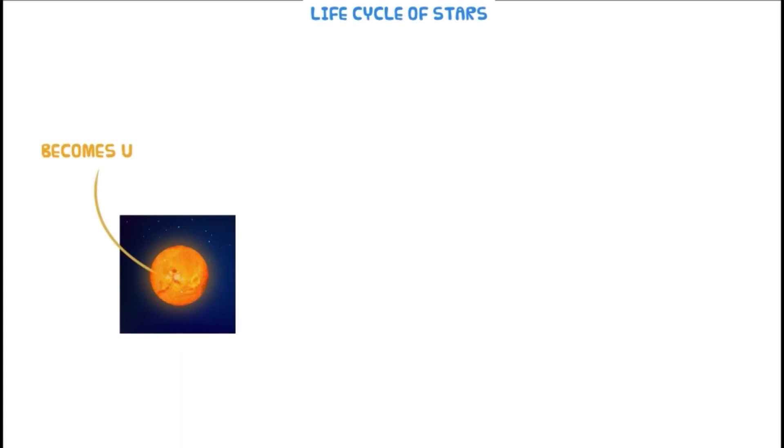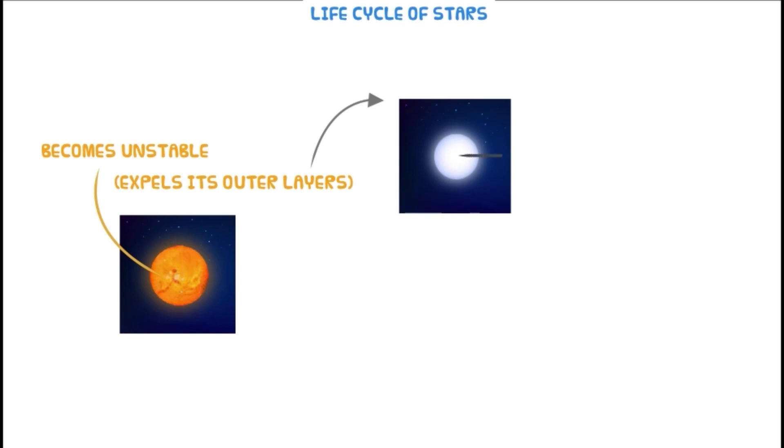For a star that is medium in size, when it becomes unstable, it expels its outer layers and forms a hot, dense, solid core which is known as a white dwarf.